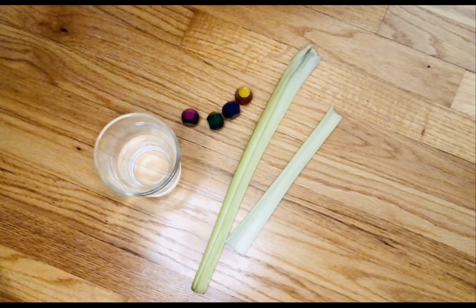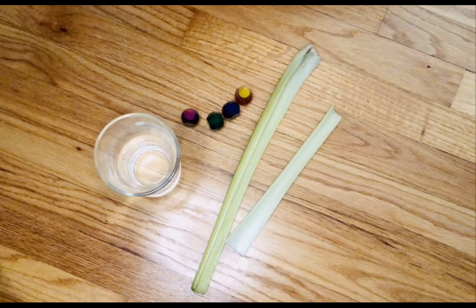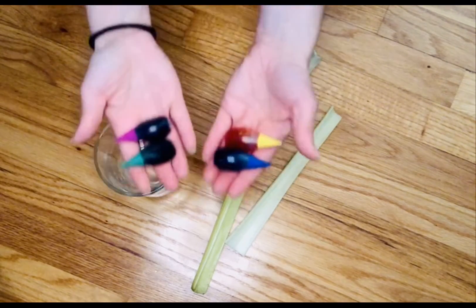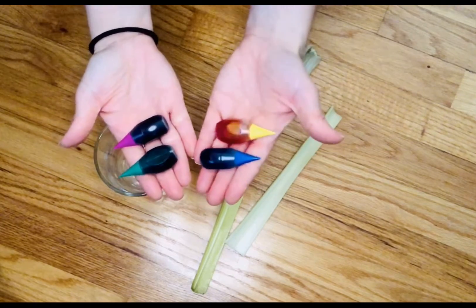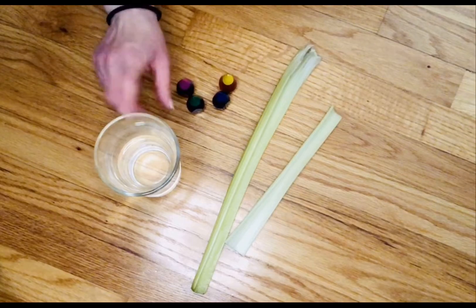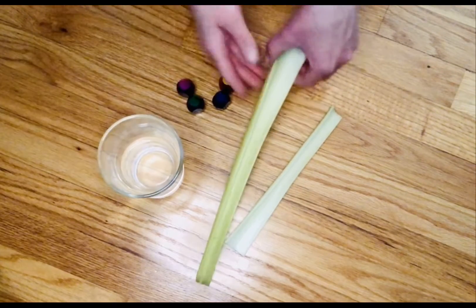Hi friends! Our first experiment that I'm going to show you today is our color changing celery experiment. For this experiment you are going to need to pick out some food coloring, and for each color you choose to use you will need a glass about halfway full with water, and you will need a piece of celery.